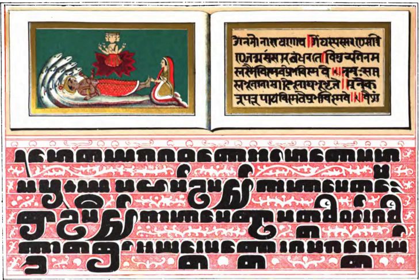A sound called anusvara, in Pali nigahita, represented by the letter Ṃ in ISO 15919 romanization and by a raised dot in most traditional alphabets, originally marked the fact that the preceding vowel was nasalized. In many traditional pronunciations, however, the anusvara is pronounced more strongly, like the velar nasal. Ṃ never follows a long vowel; ā, ī, and ū are converted to the corresponding short vowels when Ṃ is added to a stem ending in a long vowel, e.g. kathā + Ṃ becomes kathaṃ, devī + Ṃ becomes deviṃ.